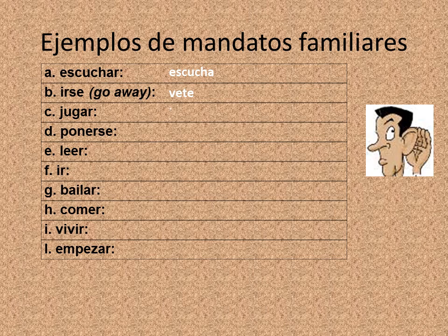Jugar — juega. And ponerse: pon is the irregular and te is attached to the end. Ponte los zapatos — put on your shoes. Leer — lee. Read. Ver — ve. That was one of our irregulars. Bailar — baila. Dance. Comer — come. Nobody has to command me to do that. Come las verduras — eat your vegetables, kids.